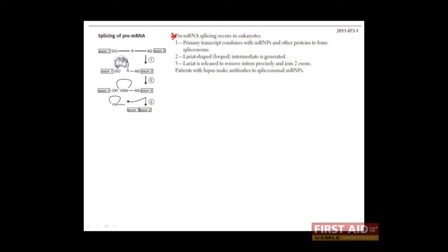So remember, this heterogeneous nuclear RNA, or pre-mRNA as we're calling it here, has to receive a 5' cap, a poly-A tail, and undergo the splicing process before it can exit the nucleus and be translated into protein.